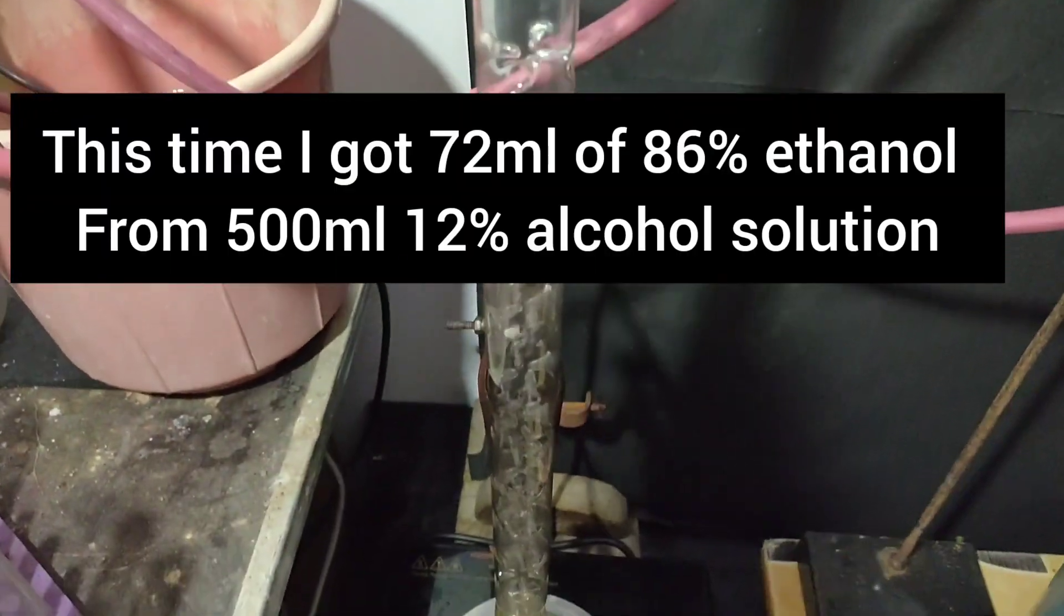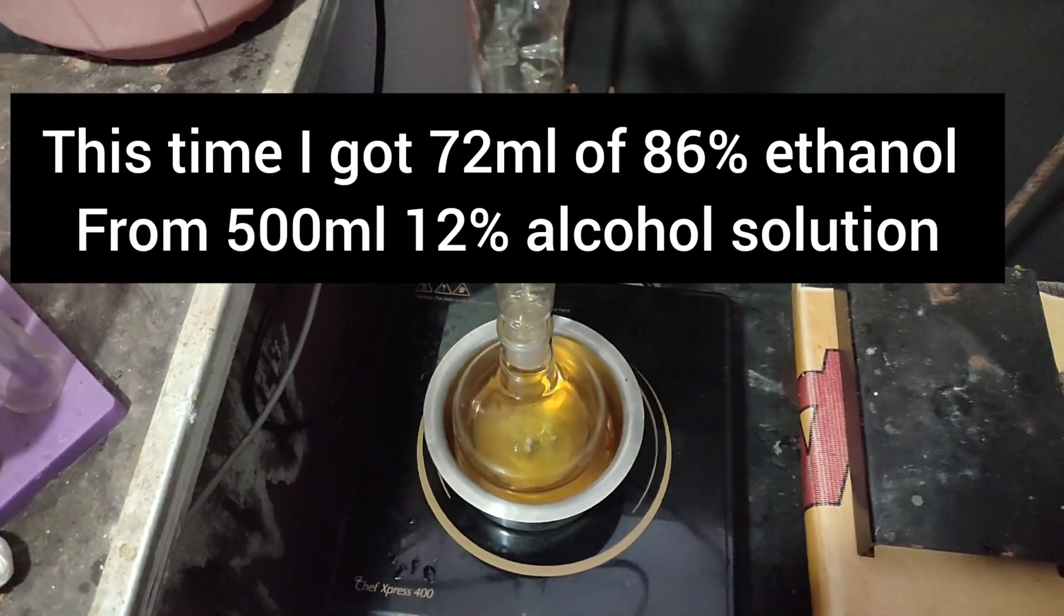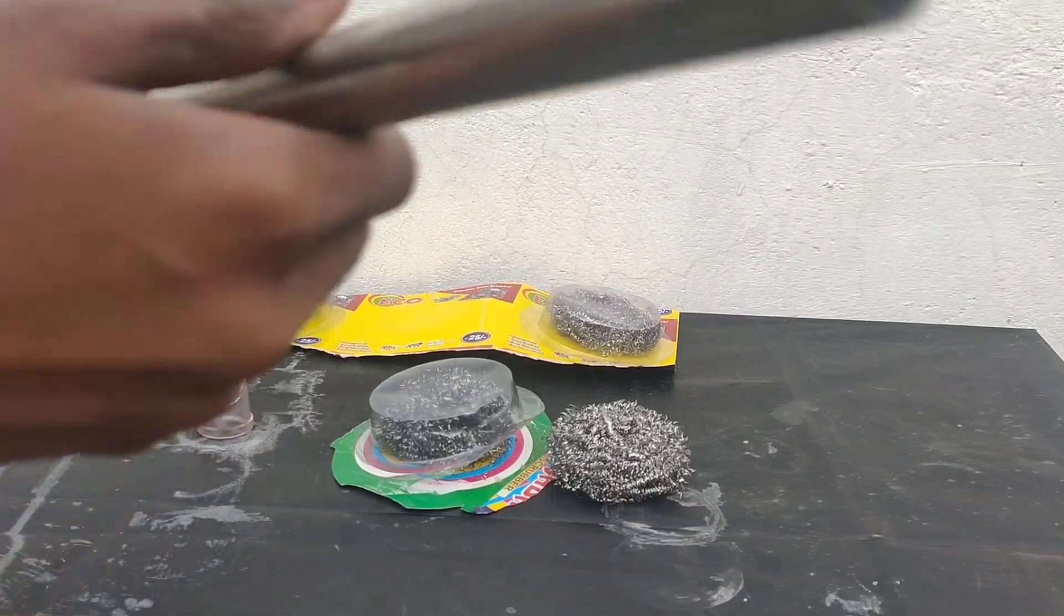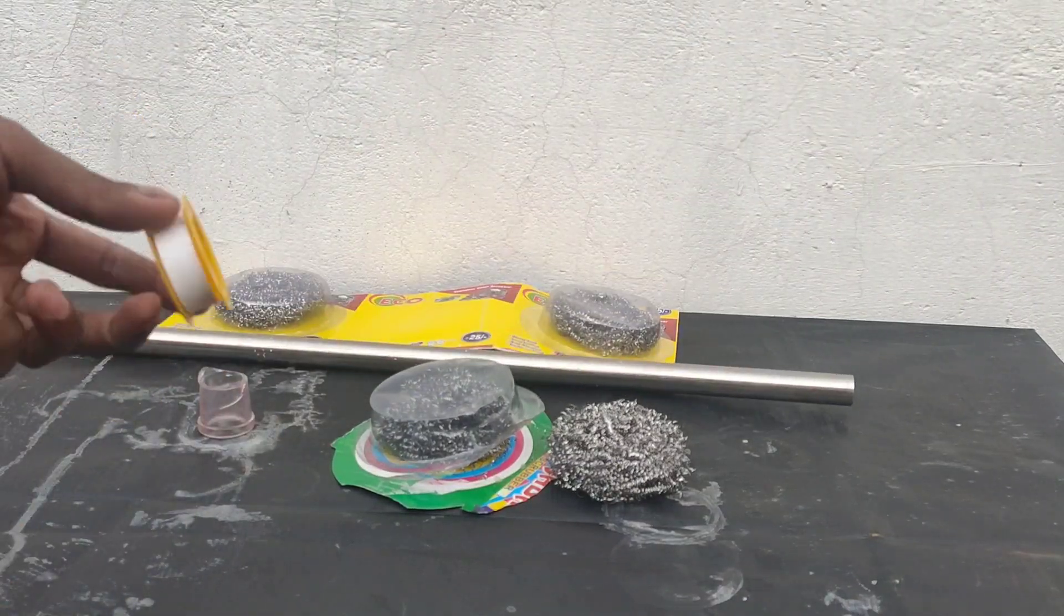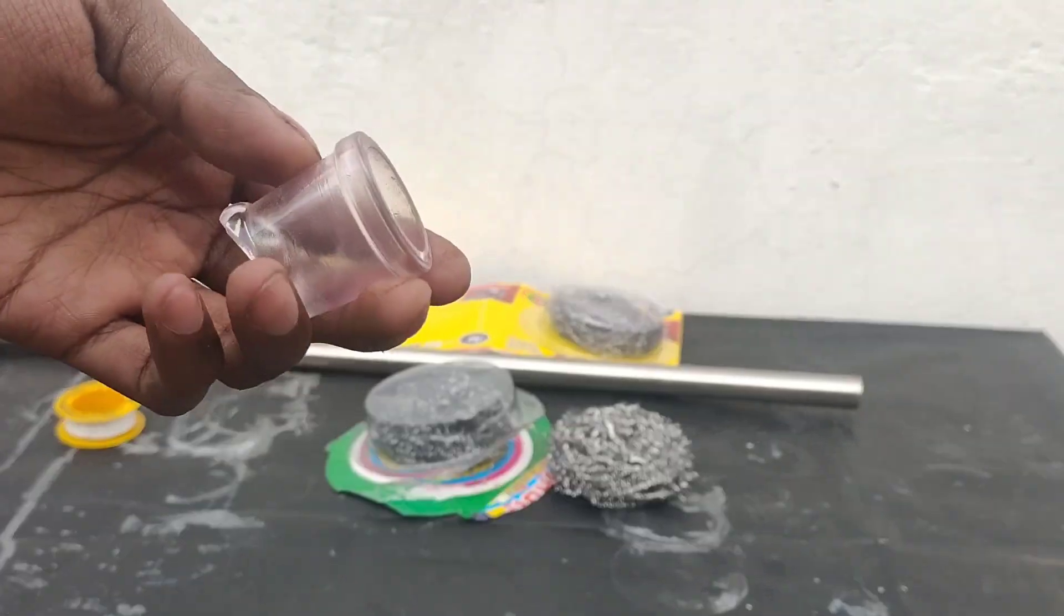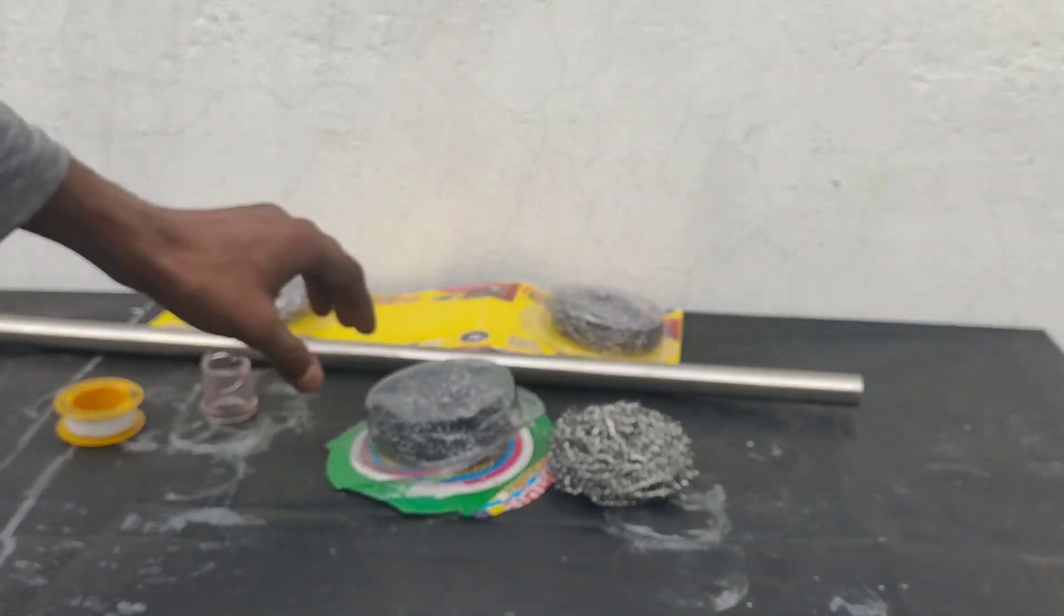I studied about fractionating columns and decided to make my own packed column. For that I took a steel tube 1.8cm in diameter, teflon tape, a B24 joint of a broken RB flask, and stainless steel scrubbers.